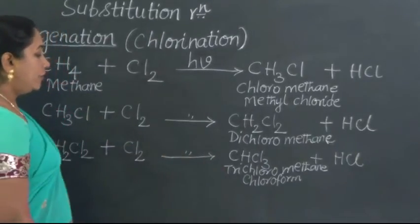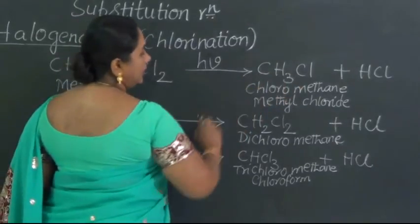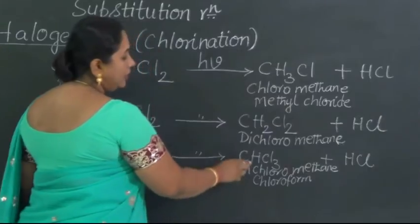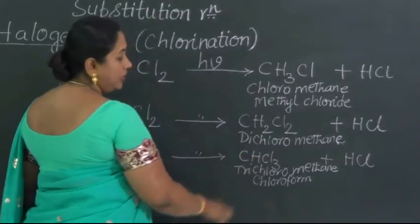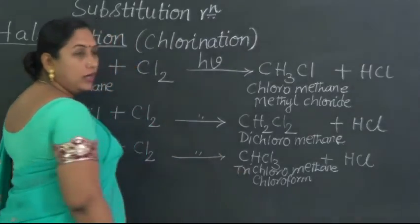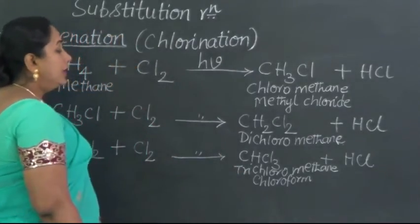Now, don't get confused between CH3Cl - CH3Cl is chloromethane - and CHCl3. CHCl3 is chloroform or trichloromethane.